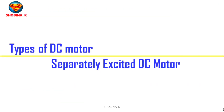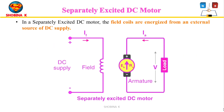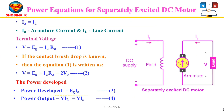In the separately excited DC motor, the coil is energized by a separate or external DC source. Here IA = IL, where IA is armature current and IL is line current. The terminal voltage is given by V = EG − IA·RA. If the contact brush drop is known, the equation becomes V = EG − IA·RA − 2VB. The power developed is EG·IA, and the power output is V·IL = V·IA, where V is terminal voltage, IA and RA are armature resistance drop, and VB is brush contact drop.